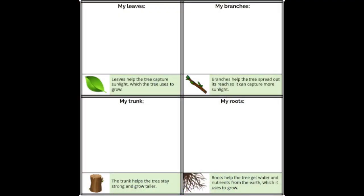root, branch, and trunk of the tree in as much detail as you can in the space that you're given. Each of those will have a sentence to explain what that does for the tree, because each part of the tree plays a different role in helping the tree survive and thrive and grow to be really strong and provide all those benefits that we talked about at the beginning.